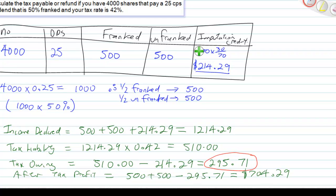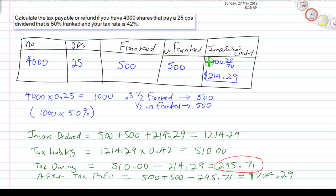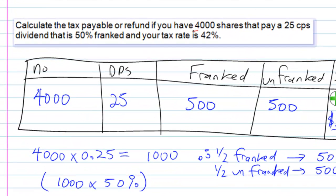Let's have a look at the next one. The next one, we're going to have a look at what happens here with your, if there's partially franked dividend. Calculate your tax payable or refund. Here we go up here again. If you have 4,000 shares, $0.25 per share, 50% franking, and your 42% rate. So set it out again.